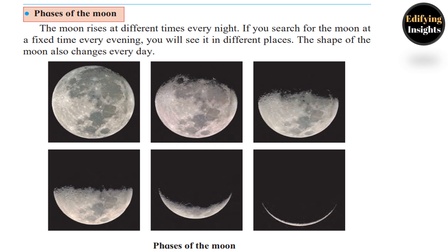The different shapes of the moon that we can see every day are called the faces of the moon. A very small shape of the moon is called the crescent moon.